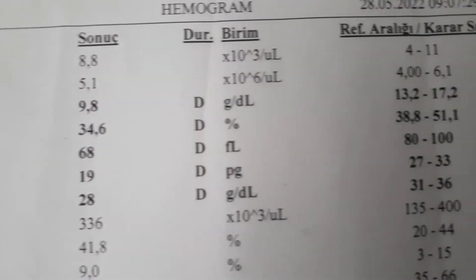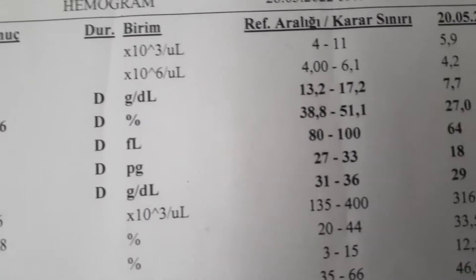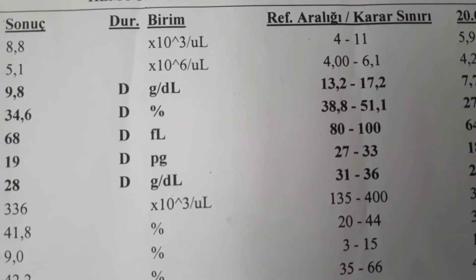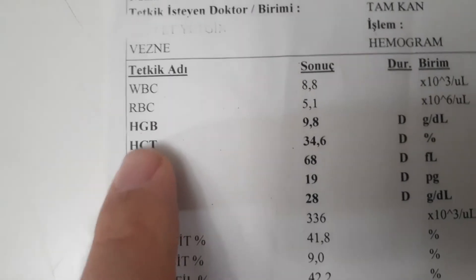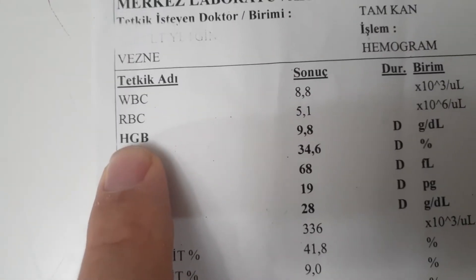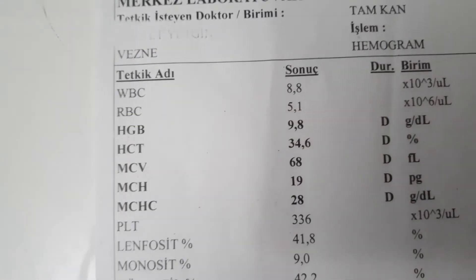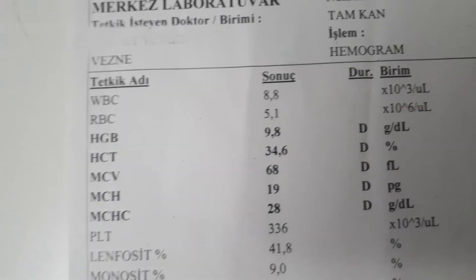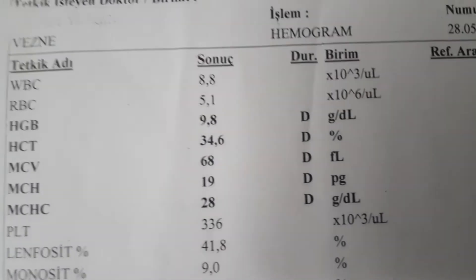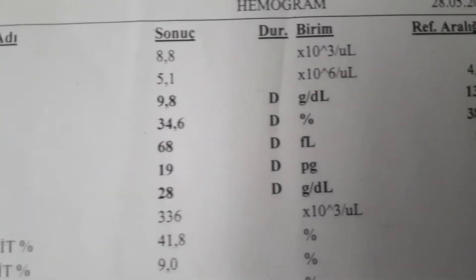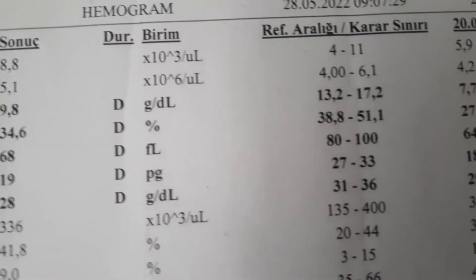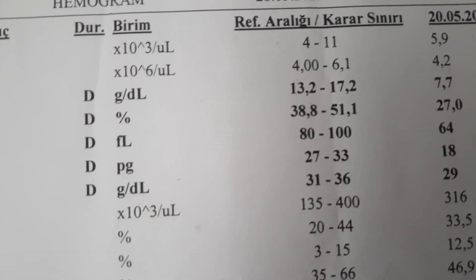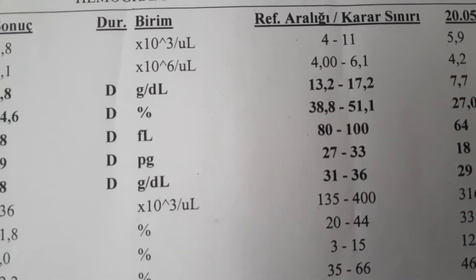HGB means hemoglobin — a protein found in the RBC responsible for carrying oxygen to the tissues. HGB rises and falls for the same reasons as RBC. In this report, the patient's value is 9.8, meaning they have anemia. The doctor will investigate the reason, and one of the causes I mentioned will come out.